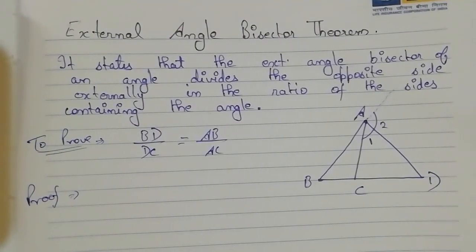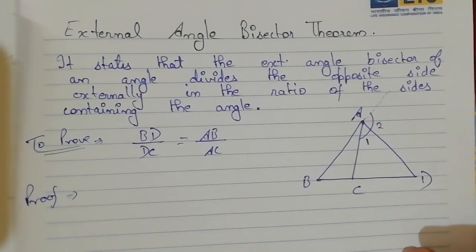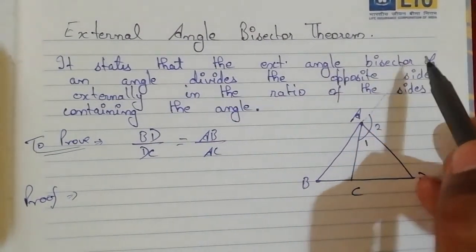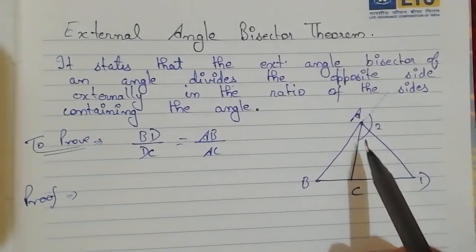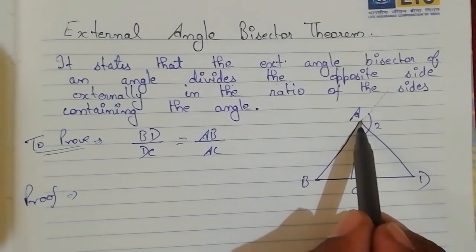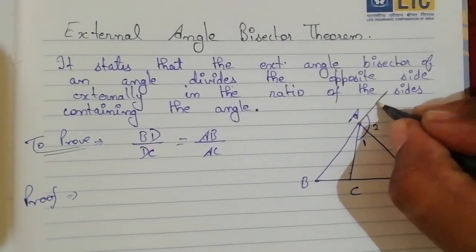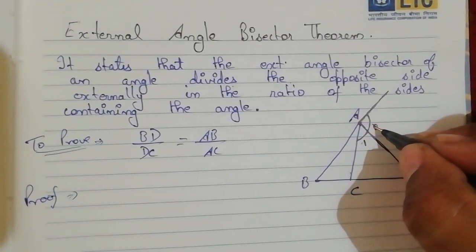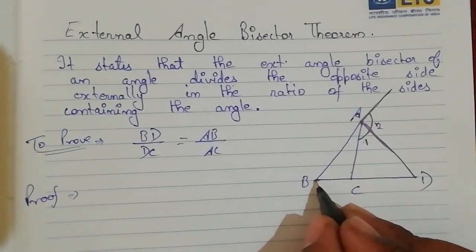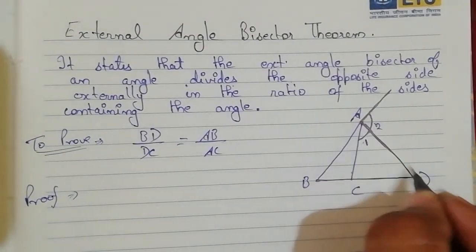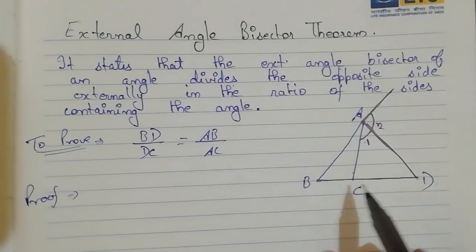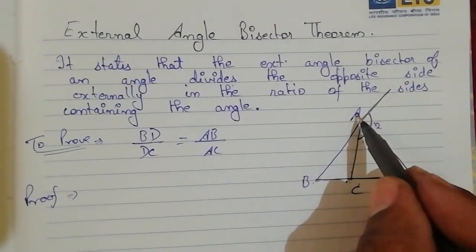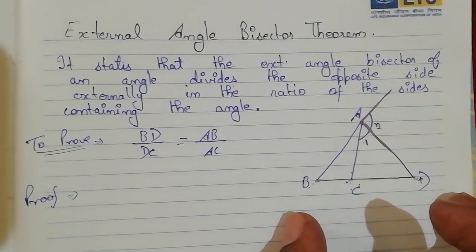Now we move to another important theorem: the external angle bisector theorem. The statement says the external angle bisector of an angle divides the opposite side — in triangle ABC, if we draw an external angle bisector where angle 1 equals angle 2 and the third side is produced to meet the bisector at D, then BD upon DC equals AB upon AC.